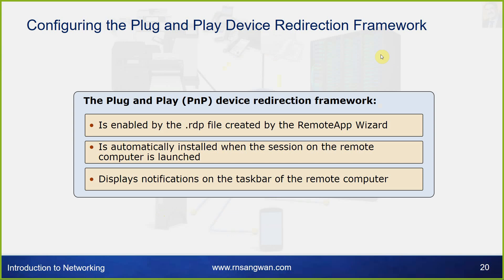The plug-and-play device redirection framework is enabled by an .rdp file created by the Remote App Wizard. It is automatically installed when the session on the remote computer is launched and displays notifications on the taskbar of the remote computer.